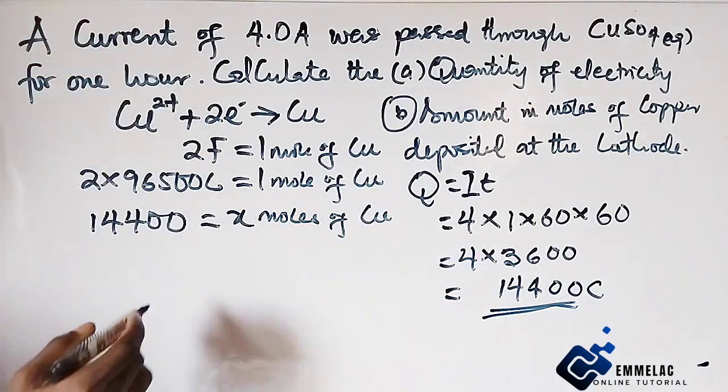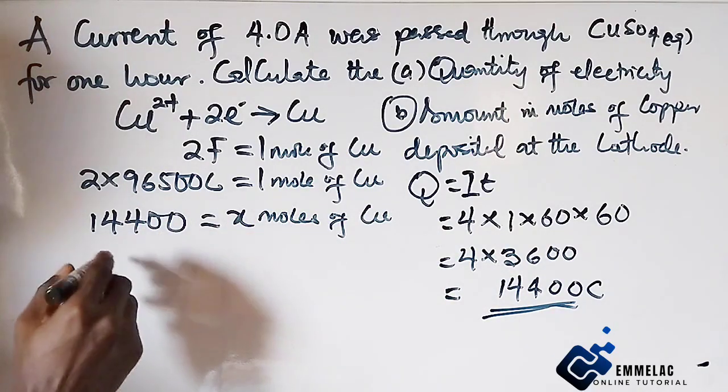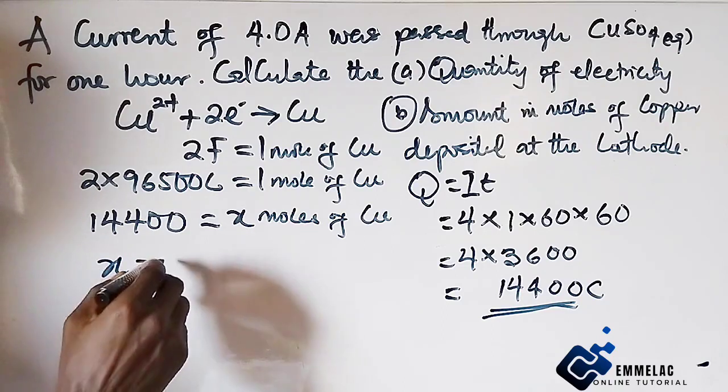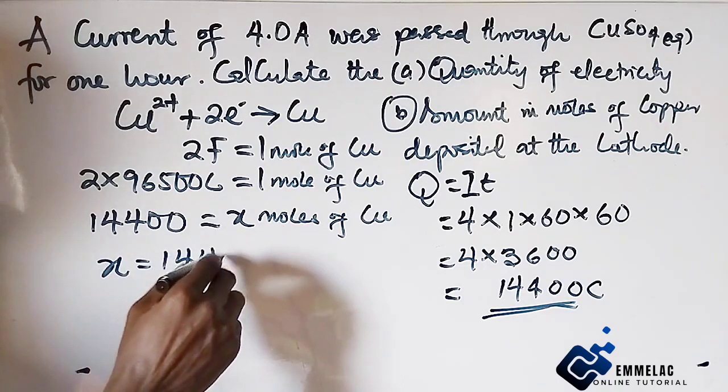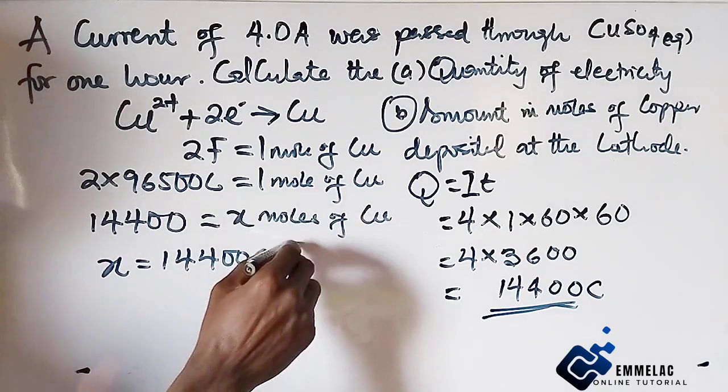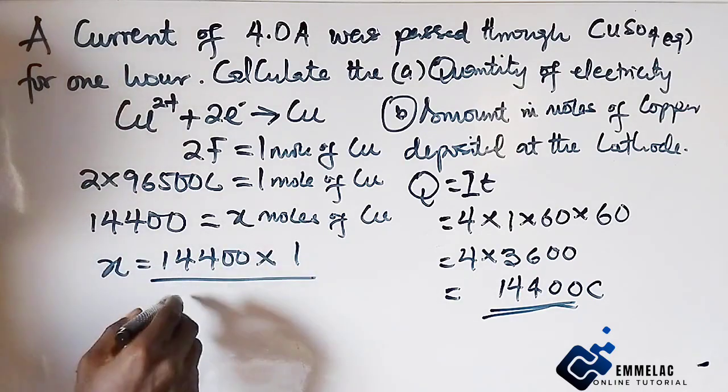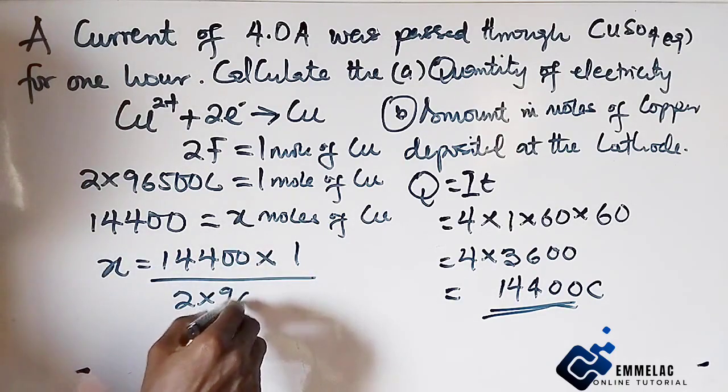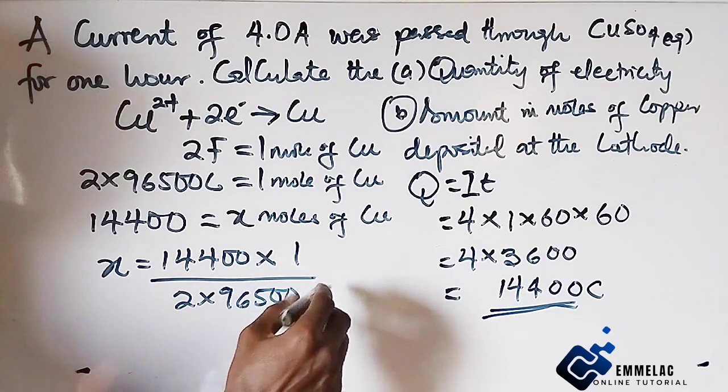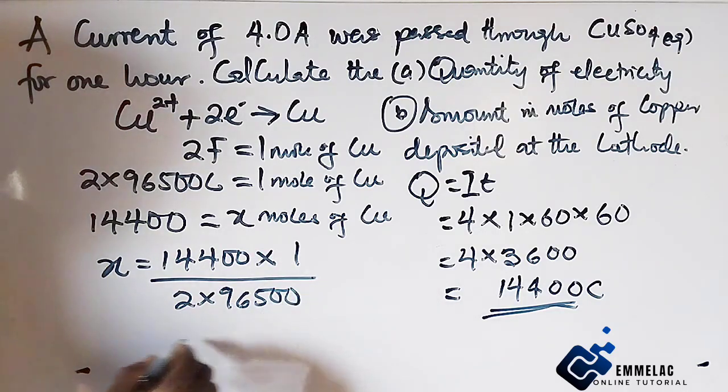Now, cross multiplying here, we are making X the subject of relation. Then X will now give us 14,400 times 1 over 2 times 96,500.